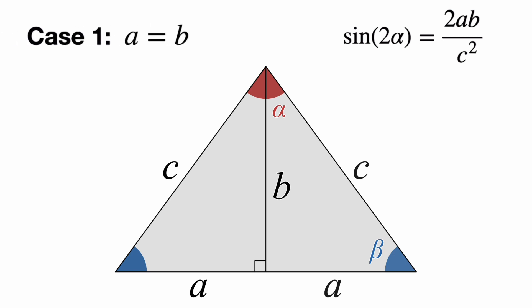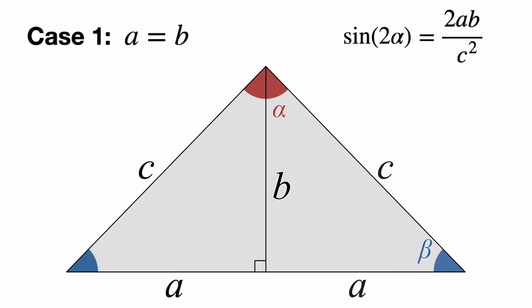The first case is where a equals b, which means alpha and beta are also equal. And since the angles in any triangle add up to 180 degrees, alpha and beta must add up to 90 degrees. So, in this case, they're both 45 degree angles. That makes 2 alpha a 90 degree angle.